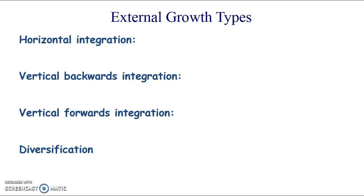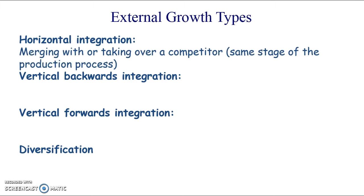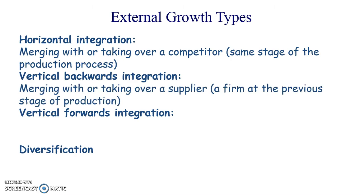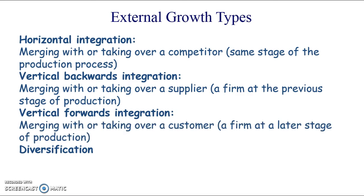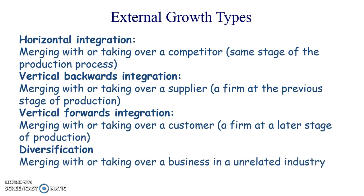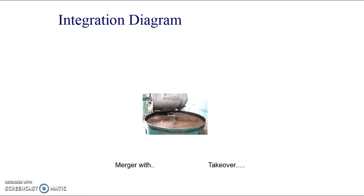There are different types of takeovers or mergers. If you buy or merge with a competitor, that's horizontal integration. If you buy your supplier, that is vertical backward integration. If you buy your customer, that is vertical forward integration. And if you buy a firm in no way related to your current business, that is diversification, sometimes called conglomerate growth.